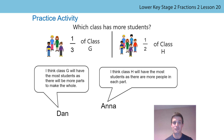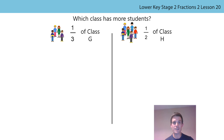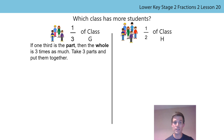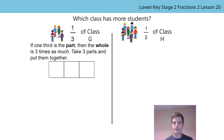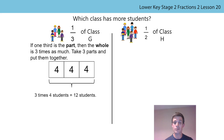Let's see if I agree with you. Let's check your answer against mine. For class G: four students are a third of the class, so if one third is the part, the whole is three times as much. We take three parts and put them together — that's our whole. In each part there are four students, so three times four students equals 12 students.